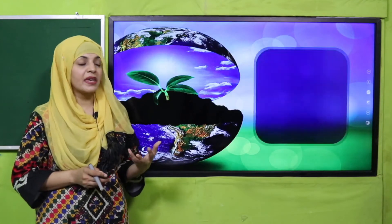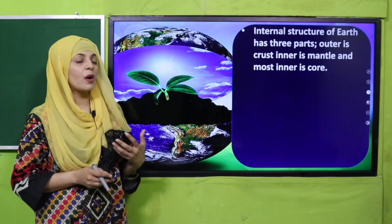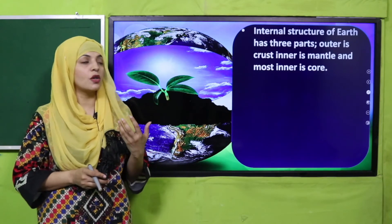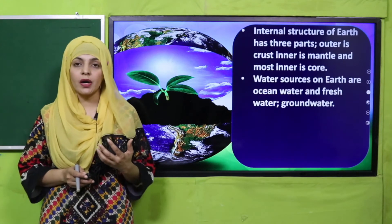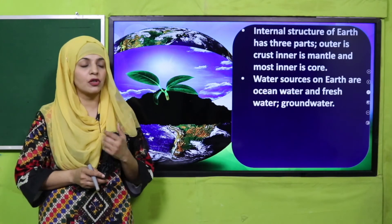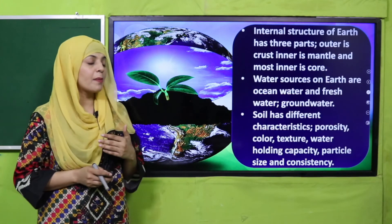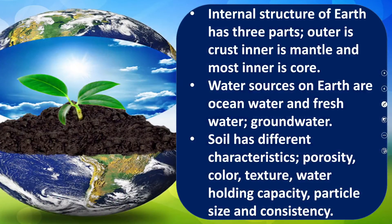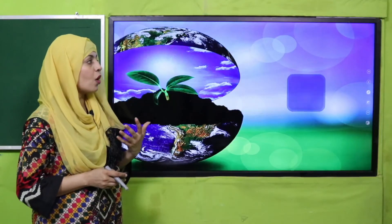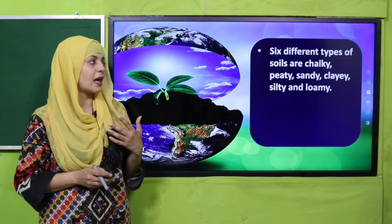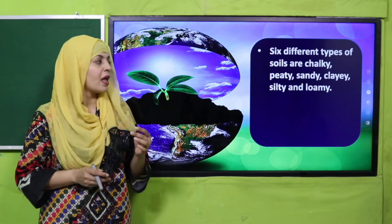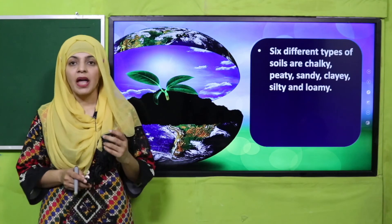Now is the time for wrap-up. So in this chapter we discussed about the internal structure of the earth — the layers of the earth, that is mantle, crust, and core. Then we discussed about the water resources on the earth, which are oceanic resources and fresh water resources. Then we discussed about the different characteristics of the soil: porosity, color, texture, water holding capacity, particle size, and consistency.